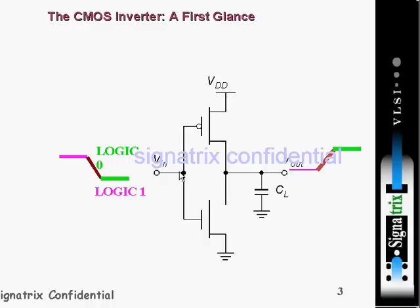When you apply logic 0 at the input, the PMOS transistor gets activated. It has a resistor, so VDD will come and charge this capacitor, giving you 5 volts. Similarly, when you apply logic 1, whatever charge is in the capacitor gets discharged, so the output you get is 0.